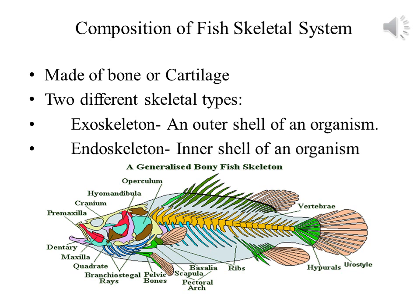In this picture, you can see a generalized bony fish skeleton. In the head region of this fish, you can see the bones of operculum, hyomandibula, cranium, premaxilla bone present in jaw, dentary, maxilla, quadrate bones, branchiostegal rays, and pelvic bones.